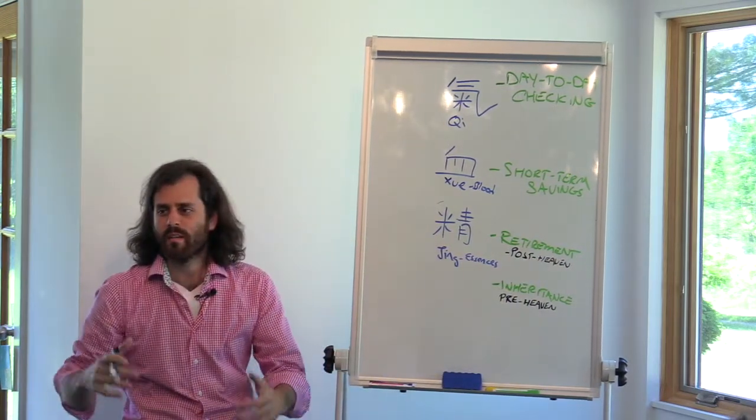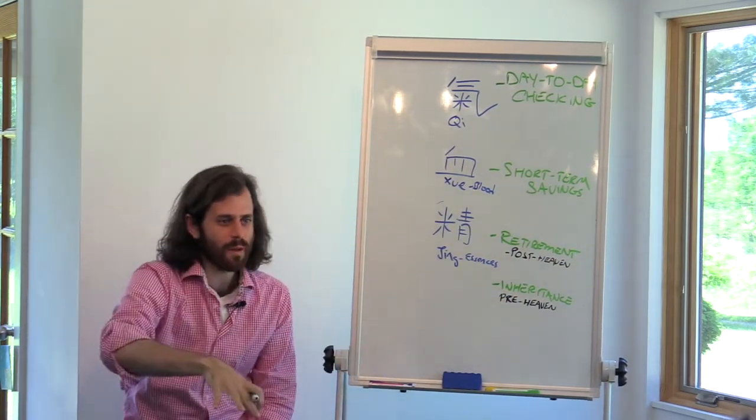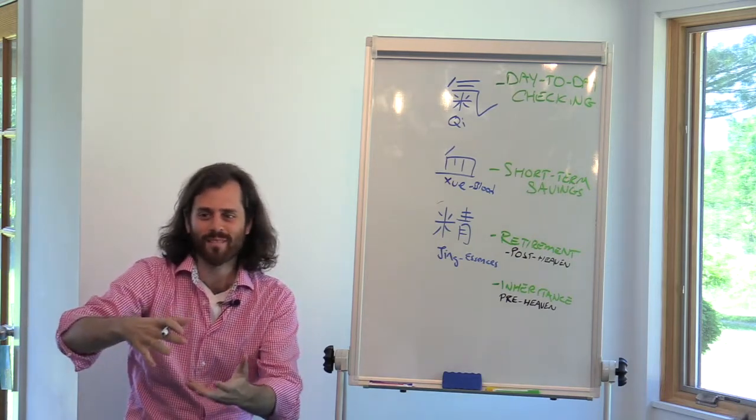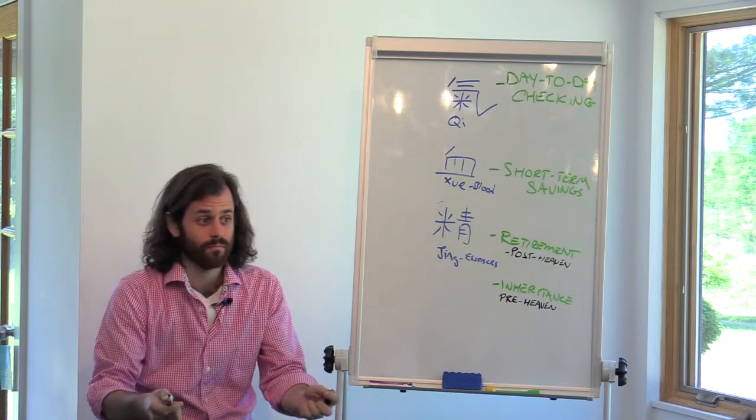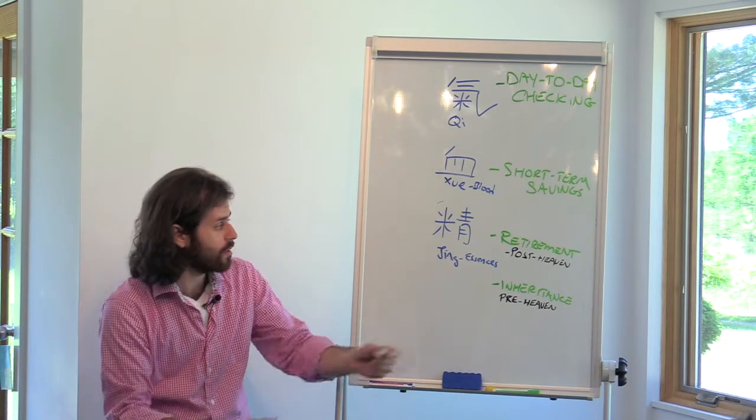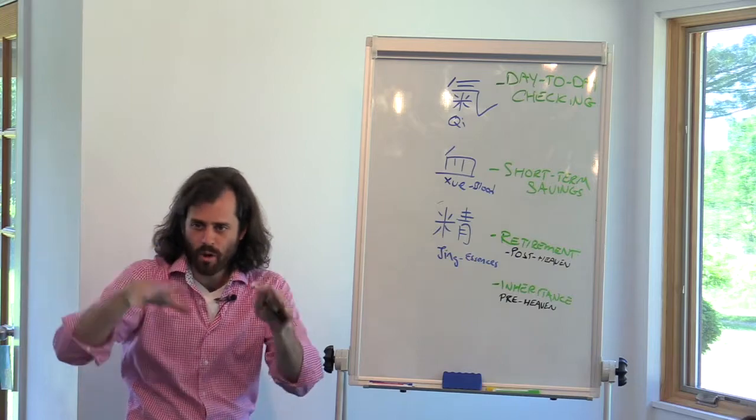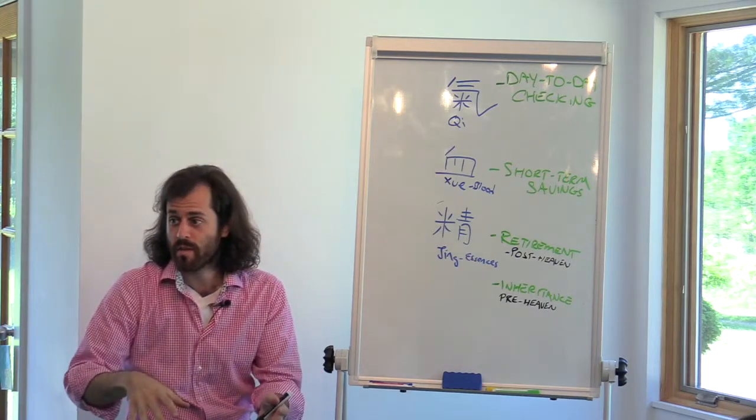Meaning, pre-heaven means, like, you were in heaven, and then you came to earth. And all of a sudden, before you got here, someone had this big, wonderful thing for you to have. A lot of resources. It gave you a lot of resources. Post-heaven means you're done with the heaven time. You're on earth. And these are the things that you save for yourself.